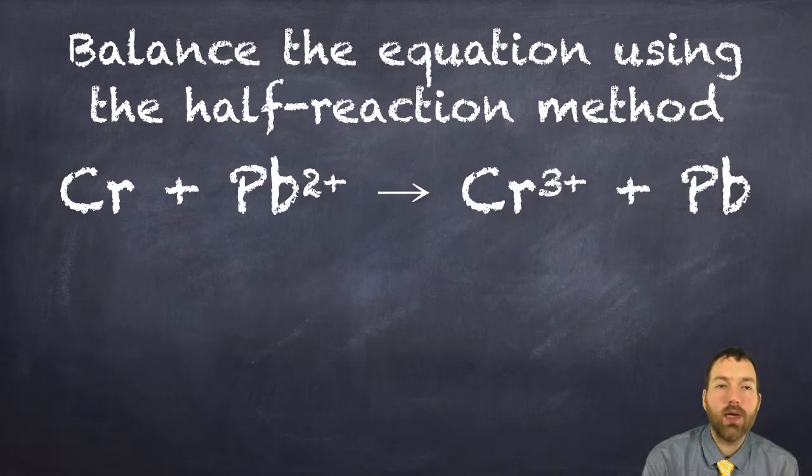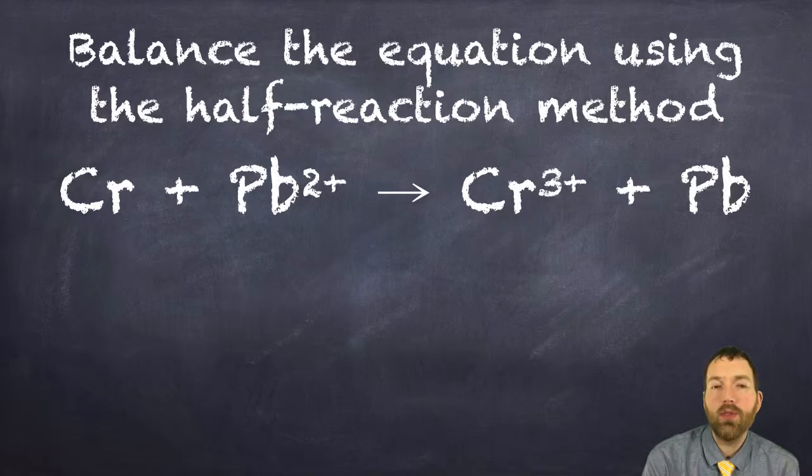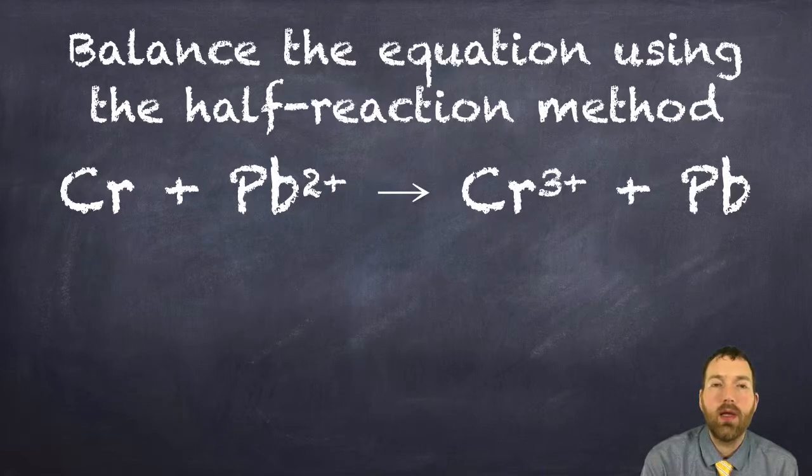Go ahead and give this one a try. Remember, first you're going to write the oxidation numbers, figure out who's oxidized, who's reduced, write the half reactions, and then multiply those half reactions by some factor to make the electrons equal. Go ahead and give this a try when you're ready. I'll show you how it's done.